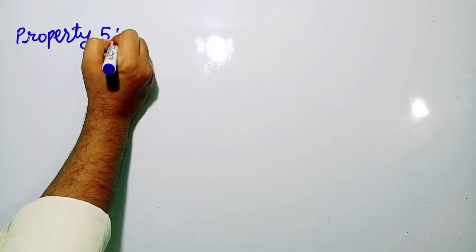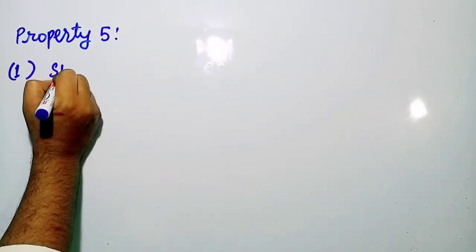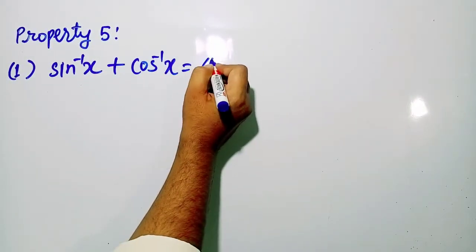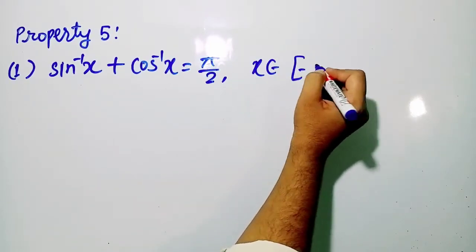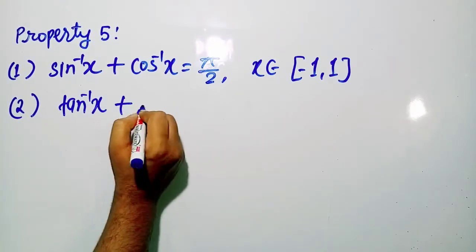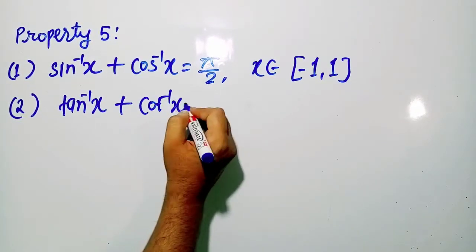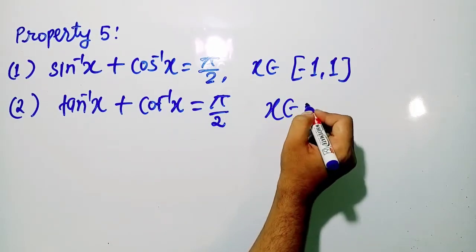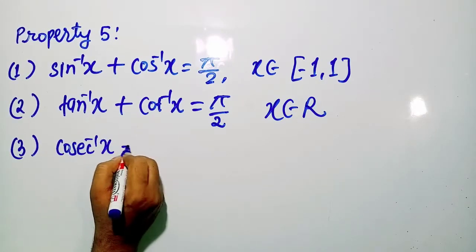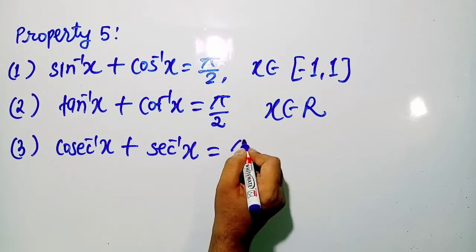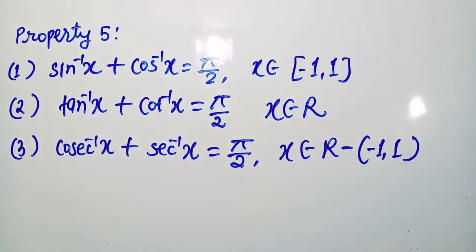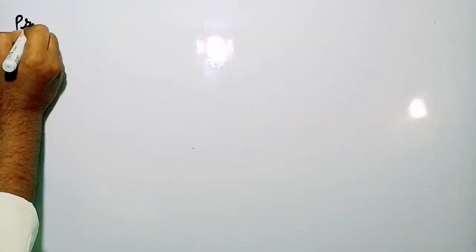Now moving to property number 5. The first one is: sin⁻¹ x + cos⁻¹ x = π/2, if x belongs to [−1, 1]. Second, tan⁻¹ x + cot⁻¹ x = π/2, where x belongs to real numbers. Third, sec⁻¹ x + cosec⁻¹ x = π/2, where x belongs to real numbers excluding the interval (−1, 1).